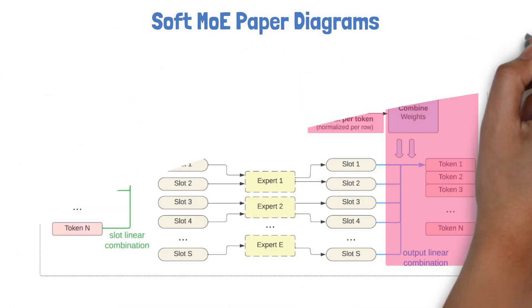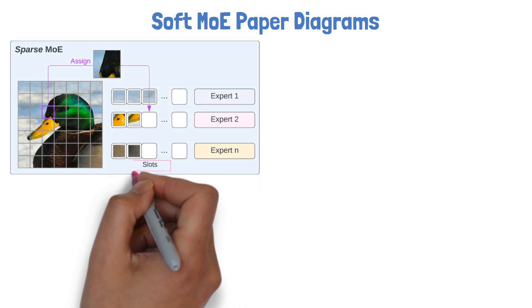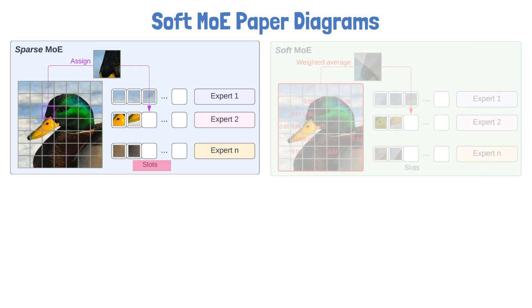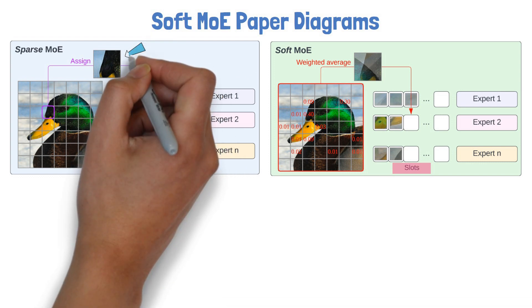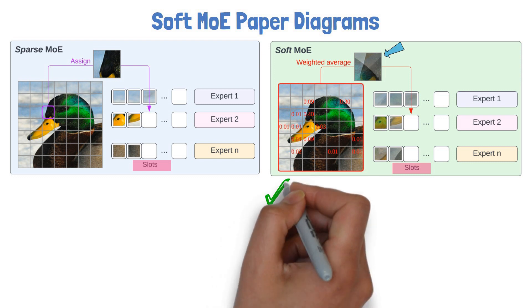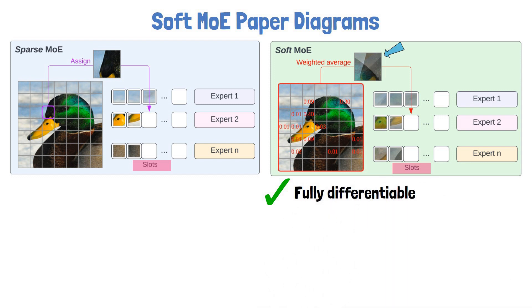Now that we have a better understanding, to re-emphasize the difference between Sparse Mixture of Experts and Soft Mixture of Experts, consider this picture from the paper. For Sparse MOE, each expert has few possible slots and we assign tokens from the input to the slots, so each expert is looking at different parts of the image. While with Soft MOE, the expert also has slots to fill, but each one is filled with the weighted average of the input tokens. Unlike Sparse MOE which requires assignment between tokens to experts, all of the operations in Soft MOE are continuous and fully differentiable, which helps to solve some of the training issues.